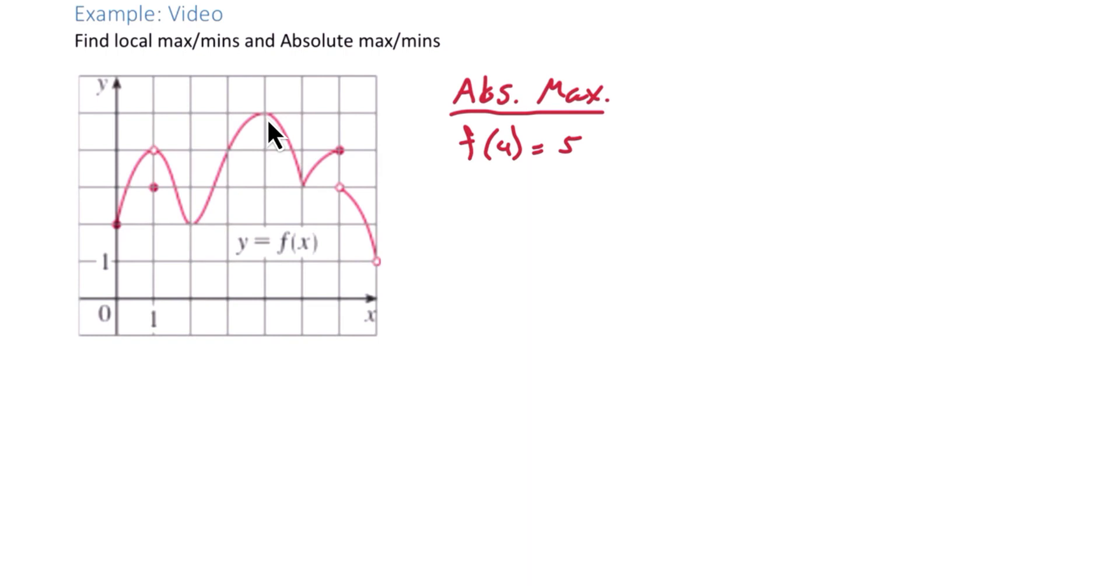Then we're looking for the lowest point on this graph. It looks like the lowest point on the graph is here, the absolute min. But notice that that circle is open, meaning that we can't actually include that point. So the absolute min of this graph does not exist.